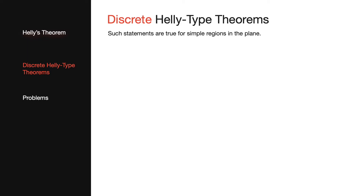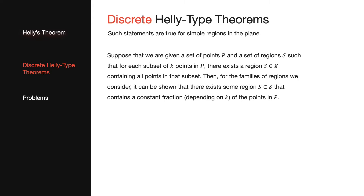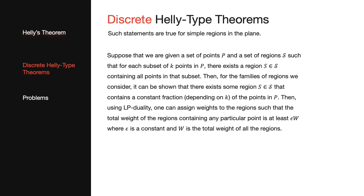While such statements are not true for arbitrary convex sets, we can show that they are true for some simple regions in the plane. We will use a technique similar to that used by Allen and Kleitman in their proof of the Hadwiger-Debrunner p,q theorem. The basic idea is as follows: given a set of points P and a set of regions S such that for each subset of k points there exists a region containing all points in that subset, it can be shown that there exists a region containing a constant fraction of the points in our point set.